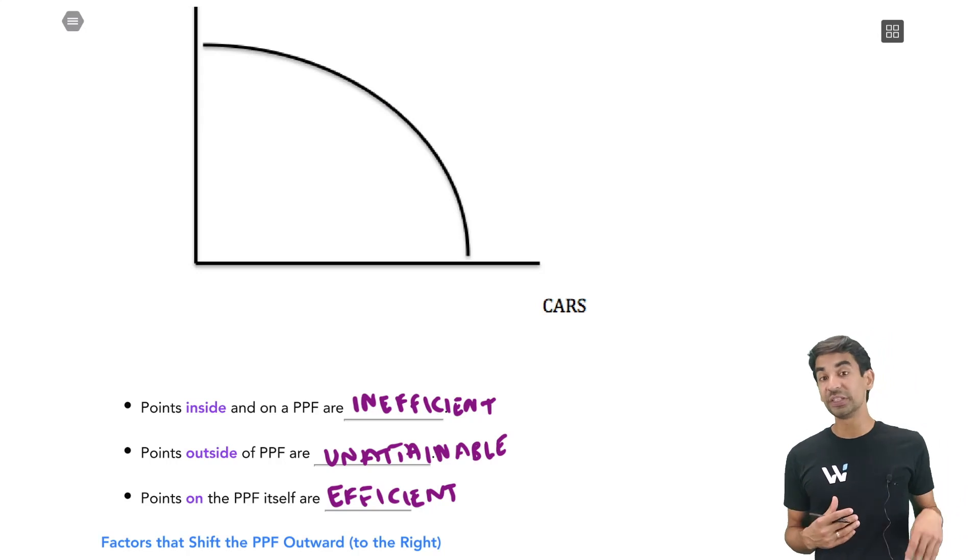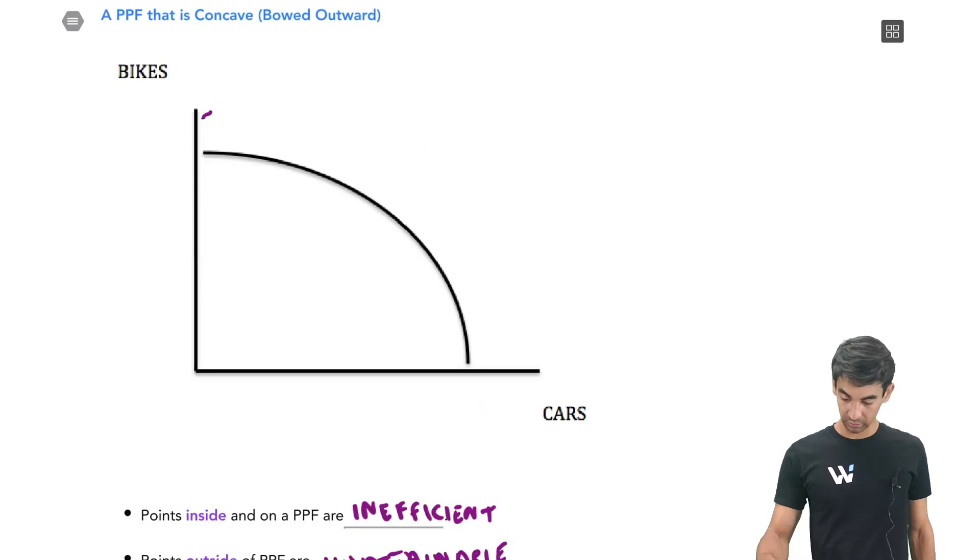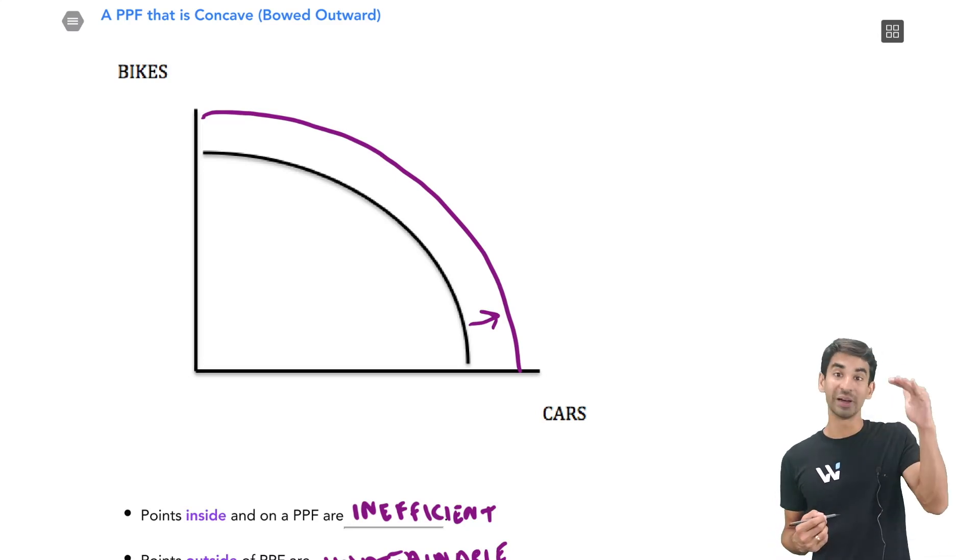What would allow us to reach that point that was outside the PPF is in two ways. If we got more resources or better resources. So more resources would be something like more immigration. So more workers coming into North America or if there was more oil, more land, anything like that. The whole line would shift to the right. So we could shift the whole line like this to the right. That means we can make more bikes and more cars.